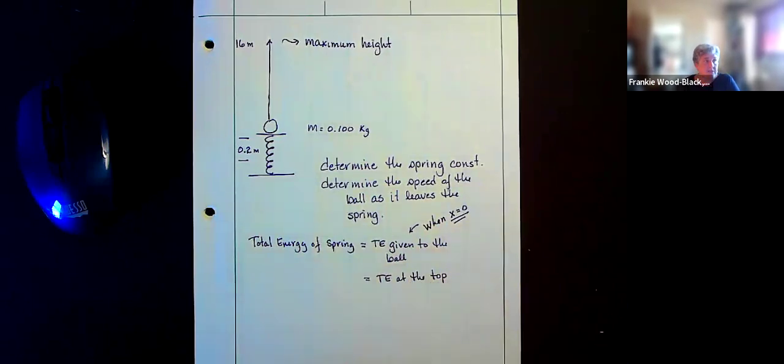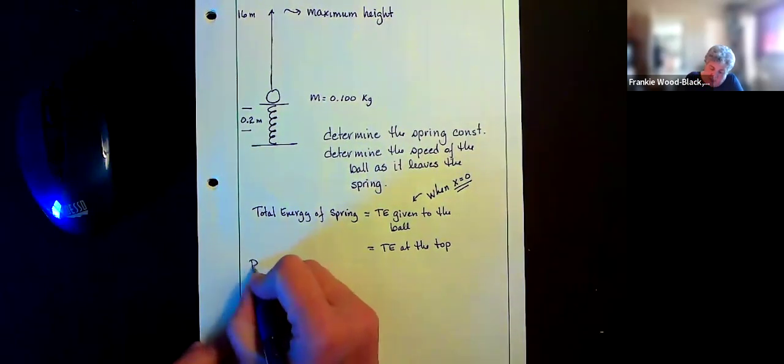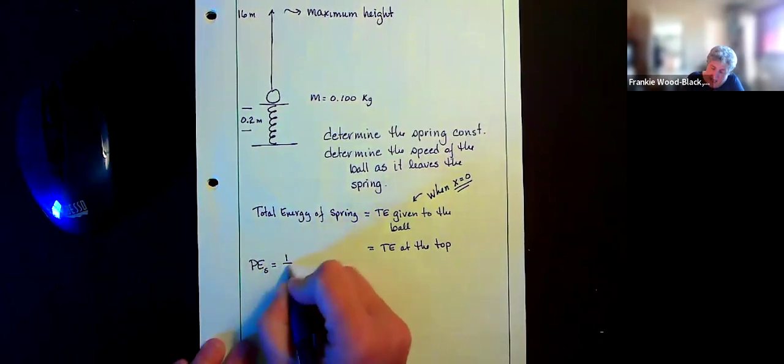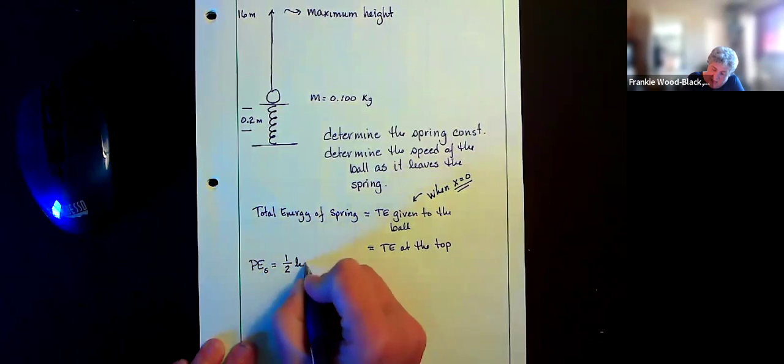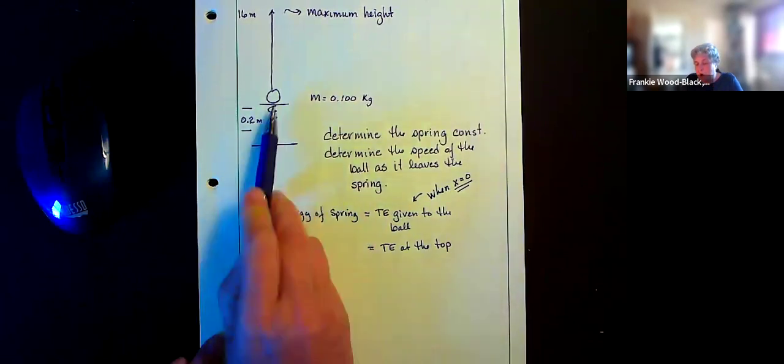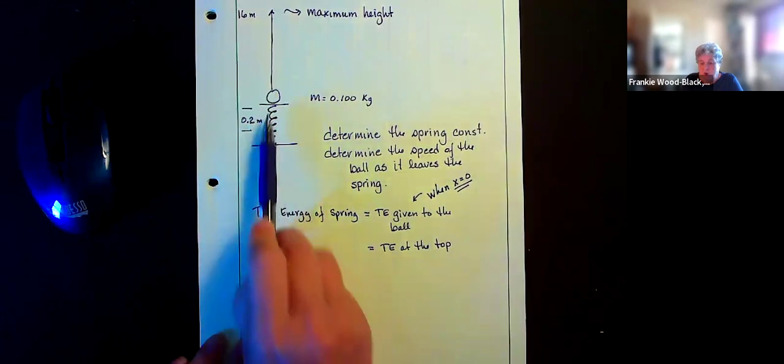So we're going to be able to get all of those pieces there. So if I want the potential energy of the spring, that's going to equal one-half kx squared. My kinetic energy, once my ball leaves the spot, it's only going to have kinetic energy at that point,